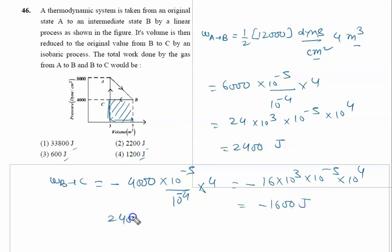So net work done: 2400 minus 1600, it is given by 800 joules, but 800 is not an answer.